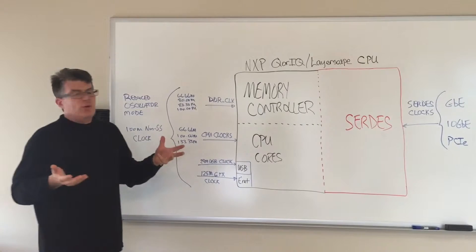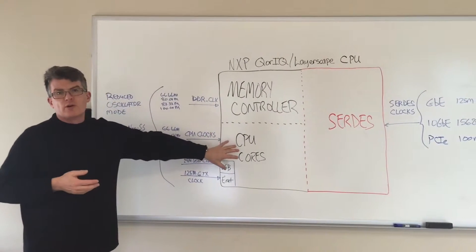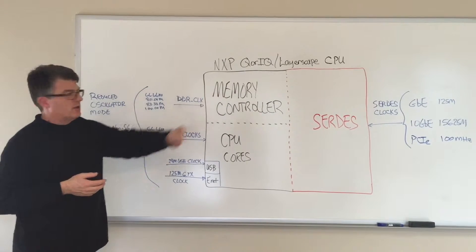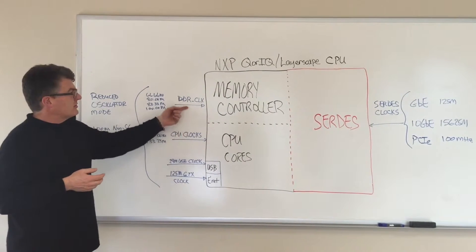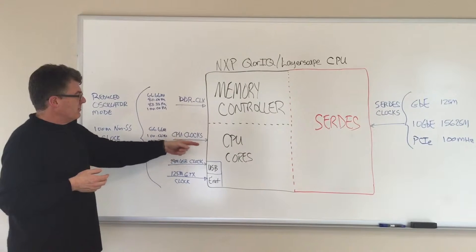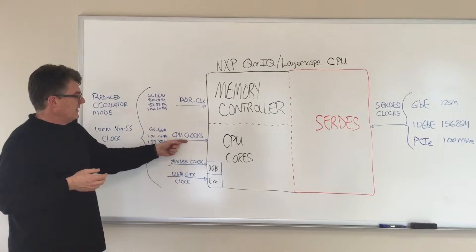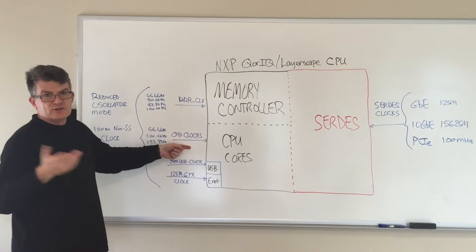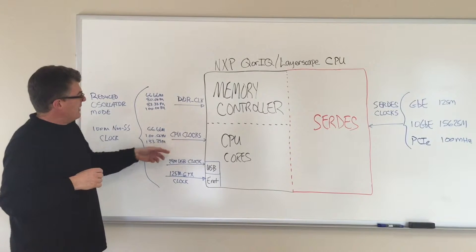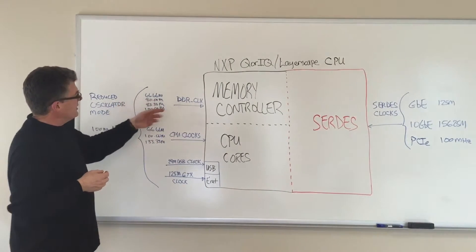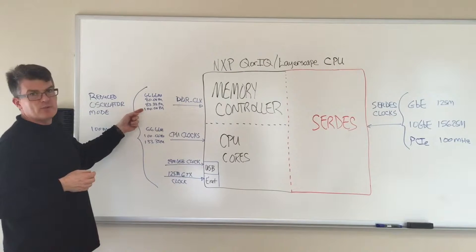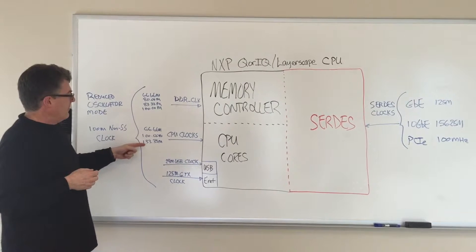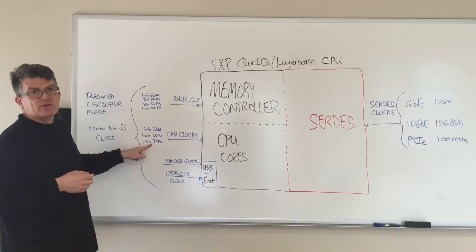If we talk about the CPU part itself, we have the CPU cores which get a clock and we have the memory controller inside the CPUs which gets a clock as well. The memory controller clock is called the DDR clock, and the CPU clock is called the SYS_CCB clock in the NXP nomenclature. Those frequencies are single-ended clocks — the DDR ranges from 66.66 MHz up to 100 MHz, and the CPU clocks range from 66.66 up to 133.33 MHz in some cases.